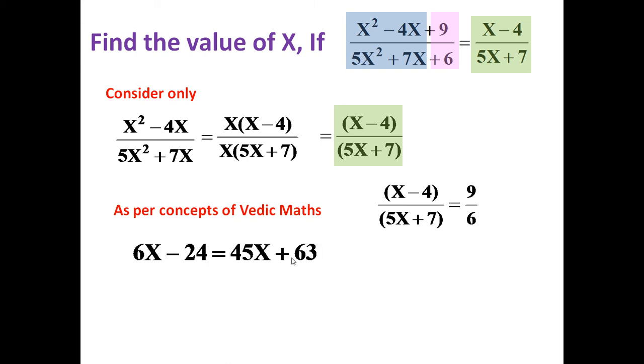Let us simplify it. 6x minus 24 is equal to 45x plus 63. 39x is equal to minus 87 or x is equal to minus 87 upon 39.